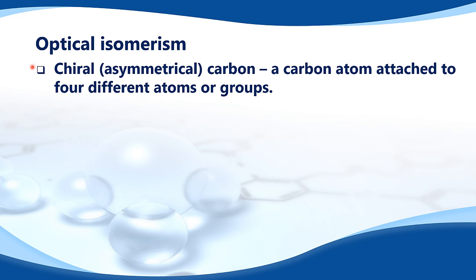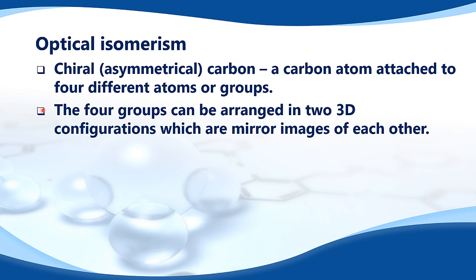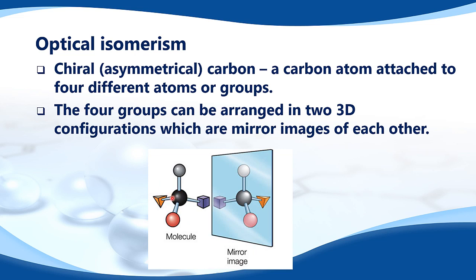Optical isomerism: a chiral or asymmetrical carbon is a carbon atom attached to four different atoms or groups. The four groups can be arranged in two 3D configurations which are mirror images of each other. Here we have a chiral or asymmetrical carbon atom attached to four different groups, arranged in two 3D configurations that are mirror images of each other.